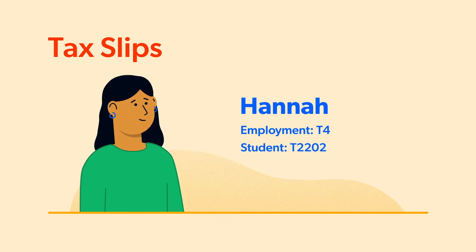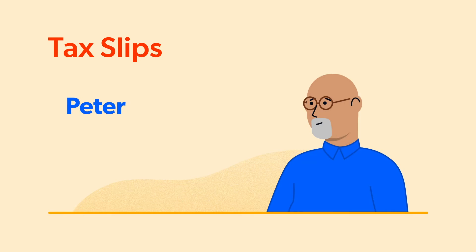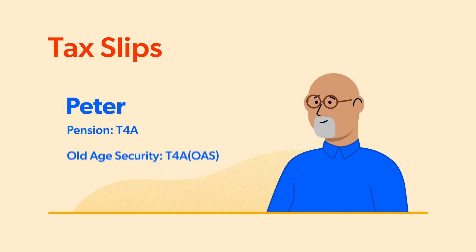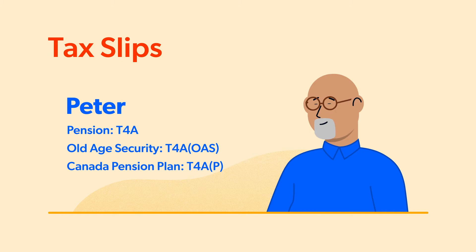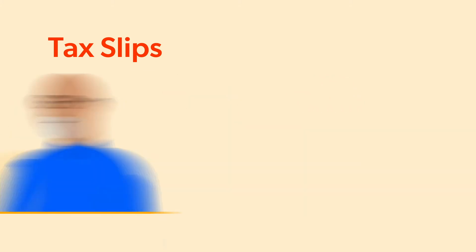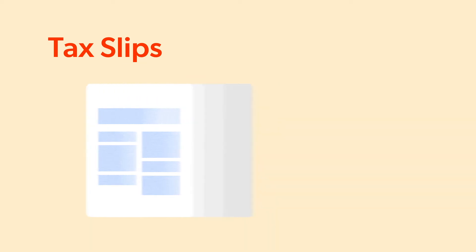And she's a student, so she also has a T2202 from her school. Or, how about Peter? He's retired and receives a variety of T4A slips covering his pension, old age security, and CPP. The types of T slips that you will have depend on your circumstances during the tax year.